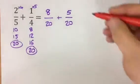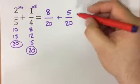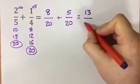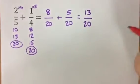Now it's a straightforward task of adding the 8 and the 5 together, which gives you an answer of 13, and the denominator remains the same. So the answer is 13 twentieths.